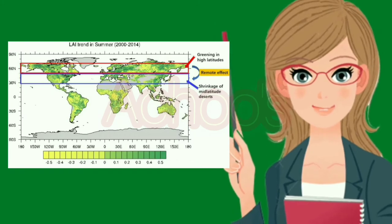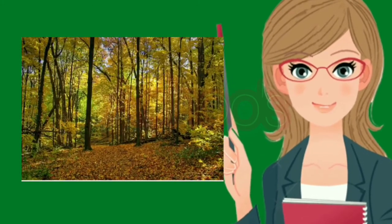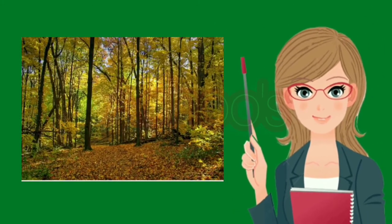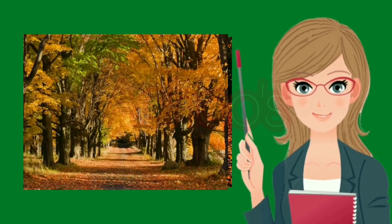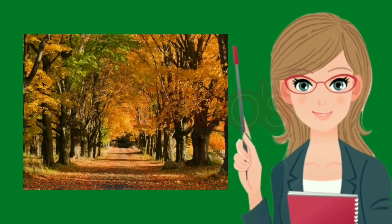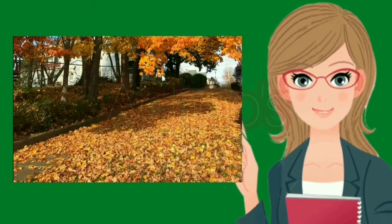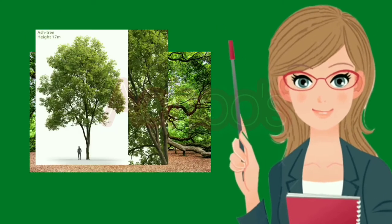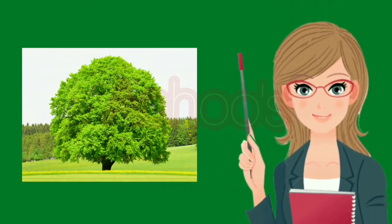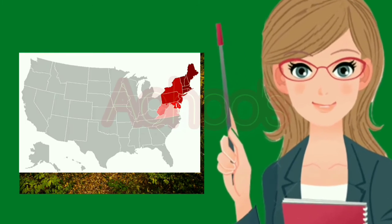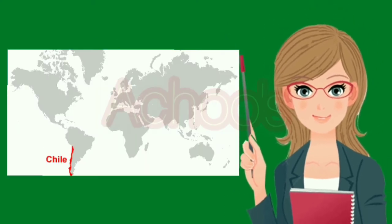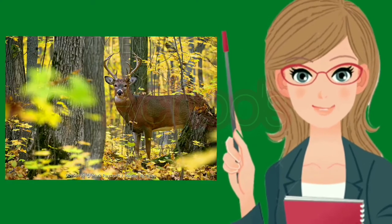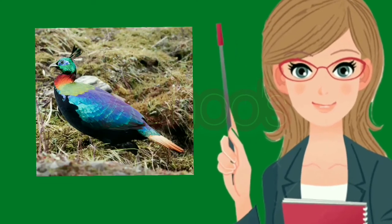The fourth one is the temperate deciduous forests. They grow in higher latitudes with moderate temperature and rainfall. During the dry season, the trees shed their leaves and give the forest the look of a vast grassland with leafless trees. The season when these trees shed their leaves is known as autumn or fall. Common trees are poplar, oak, ash, maple, and beech. These forests are found in northeastern USA, northeastern China, Japan, New Zealand, and southern parts of Chile. Animals like deer, wolves, foxes, beavers, and monals are found here.